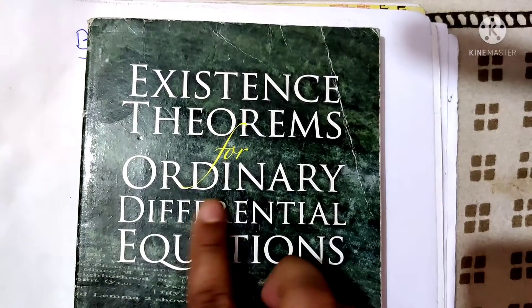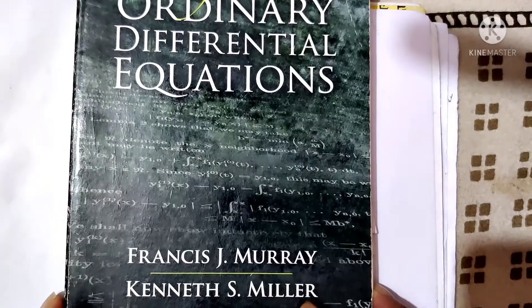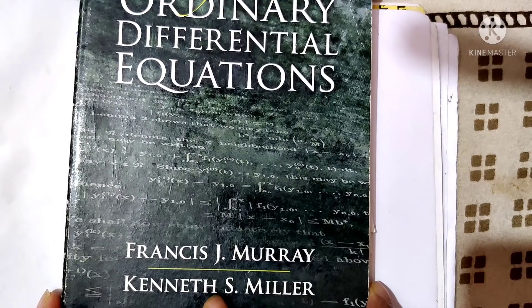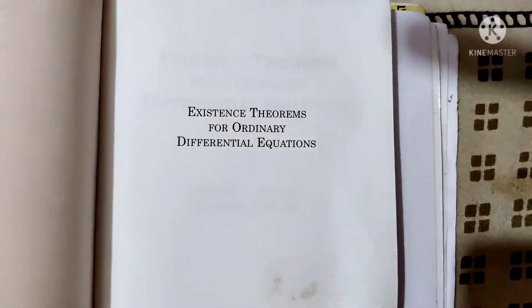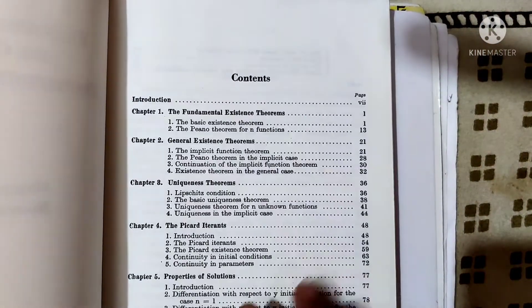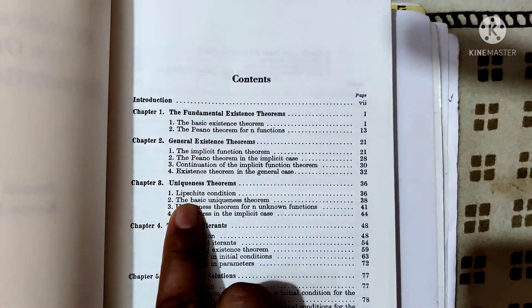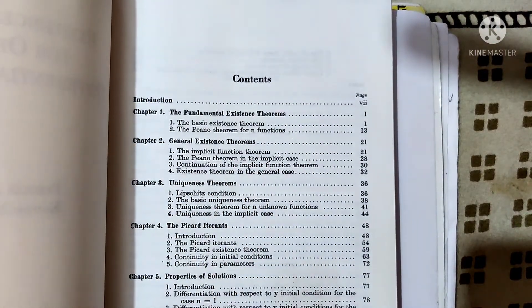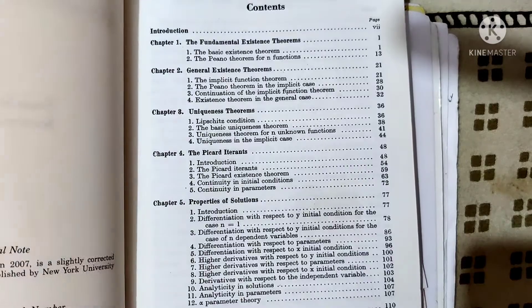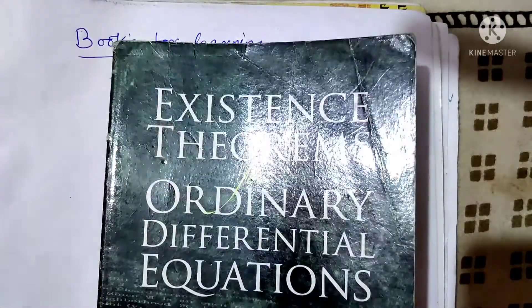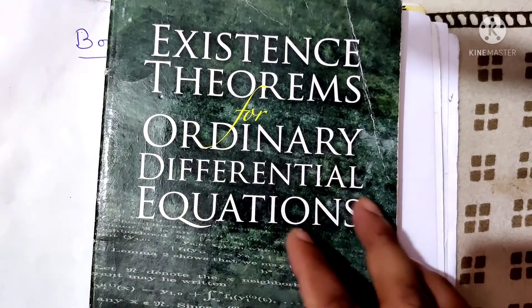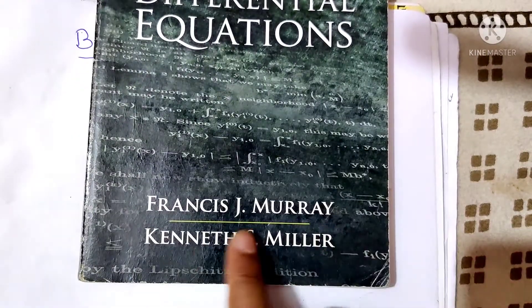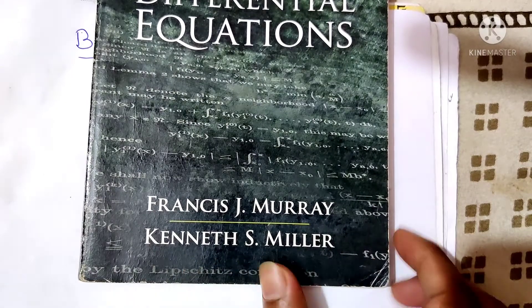Next book: 'Existence Theorems for Ordinary Differential Equations' by Francis J. Murray and Kent S. Miller. This book focuses only on existence and uniqueness — fundamental existence theorems, general existence theorems, uniqueness theorems, Picard iteration, properties of solutions, and linear differential equations. This is obviously a standard book and a great book on existence theorems for ordinary differential equations.